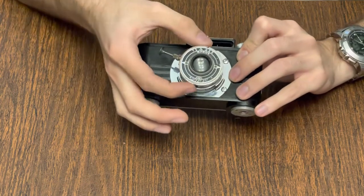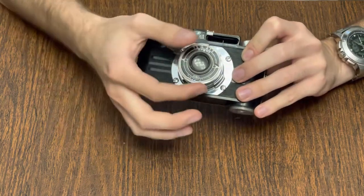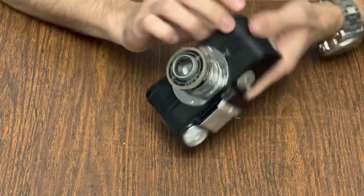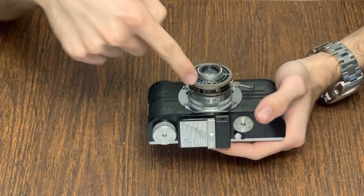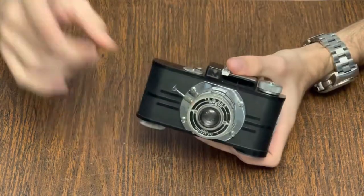The diaphragm opens to f4.5 and stops down to f18 which is calibrated in the German geometric sequence which was used on the Barnack Leicas from which the Argus A series drew inspiration.